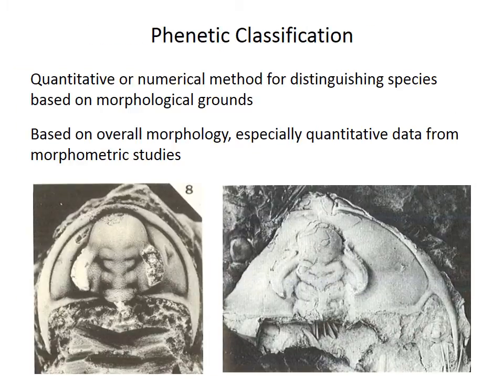Like the traditional methods, phonetics is also a purely morphological method, but it incorporates quantitative measurements that discriminate between species. In particular, it uses data from morphometric studies to quantify shape differences among individuals, and morphometrics simply refers to the use of measurements to describe aspects of shape.